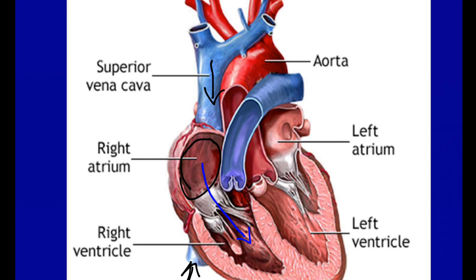You have four chambers: the right atrium, the right ventricle, the left atrium, and the left ventricle. So far we've taken blood from the vena cava into the right atrium, and that unoxygenated blood goes from the right atrium through the tricuspid valve into the right ventricle.